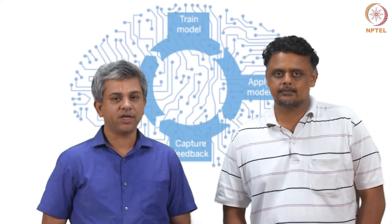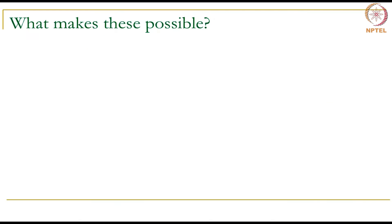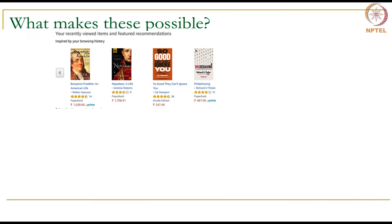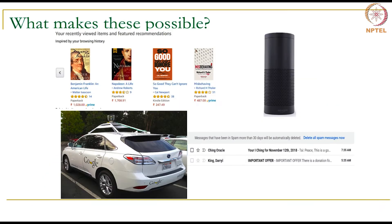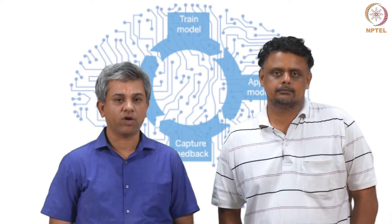If we look at various applications that all of us are already using in real life — for example, Amazon's recommender system, Amazon Echo which is a speech recognition system, Gmail's spam classifier, and Google Lexus, which is a latest self-driving car — all of these use machine learning algorithms in one way or the other.